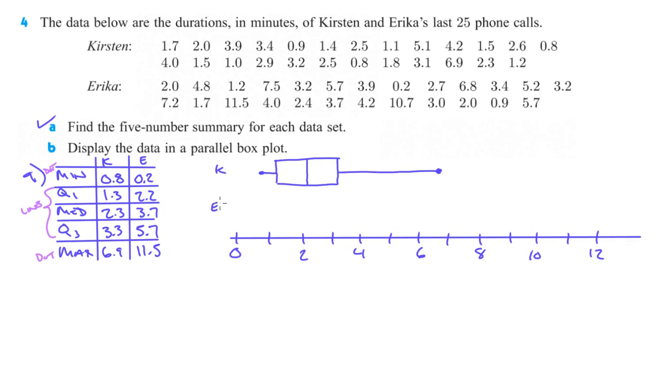And then Erica's is going to be down here. The lowest was 0.2. And then we got 2.2 is our first line. 3.7 is here. And then 5.7 is up here. And then 11.5 was the longest. Okay, so then again, we'll make our, connect our lines there to make some rectangles. And there are our two parallel box plots.